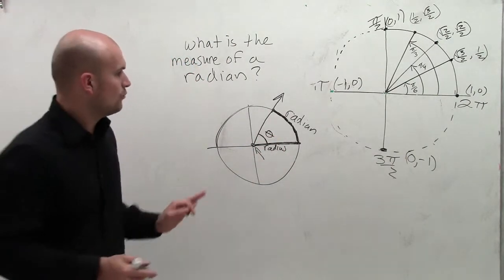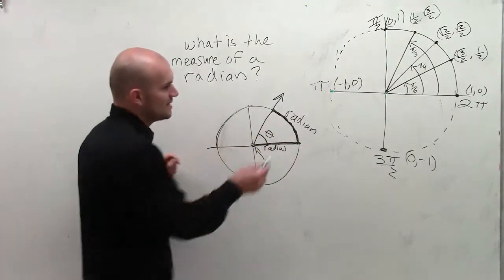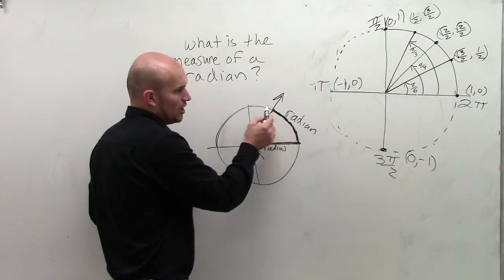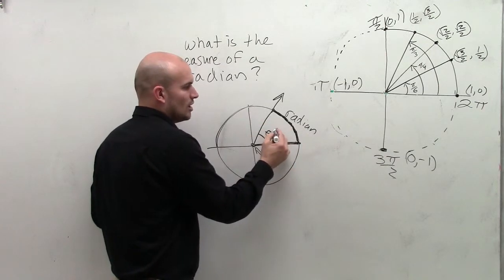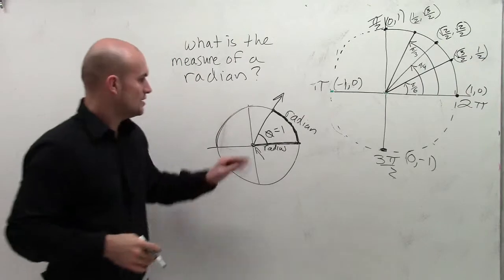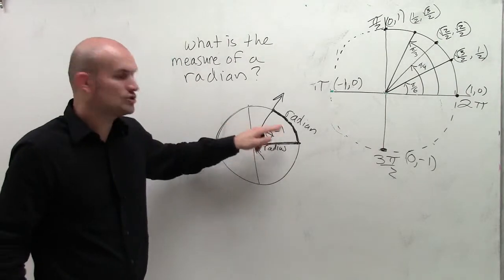So when we rotate two rays, the distance of the radius about the arc length, or we could say the distance of a radian on the arc length, what we call that is one radian. So my angle theta is equal to one radian.